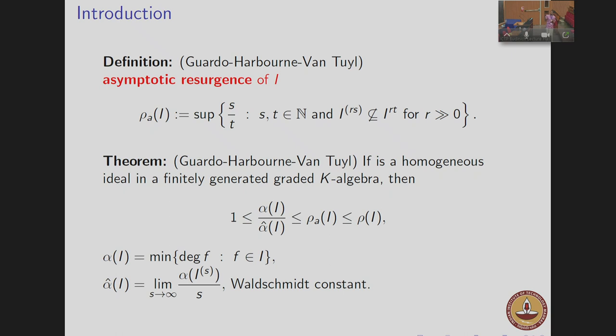They proved a sequence of inequalities: the asymptotic resurgence is between alpha-hat(I) over alpha(I) and the resurgence, where alpha(I) is the minimal degree of a minimal generator of I and alpha-hat(I) is the Waldschmidt constant.